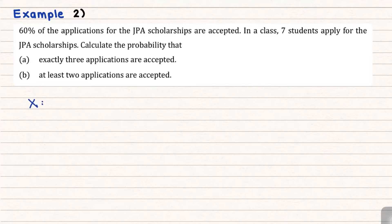So binomial, you must have a success event. Your success event, you want it to be according to the question, the JPA applicants for the JPA scholarship that are accepted. So you can put it as the number of applicants accepted.